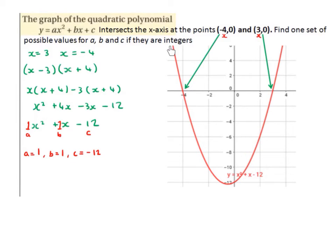So this is what the graph would look like. This is the graph of x squared plus x minus 12. It has roots at -4 and 3, and it has a y-intercept of -12, which is the point at which it crosses the y-axis.